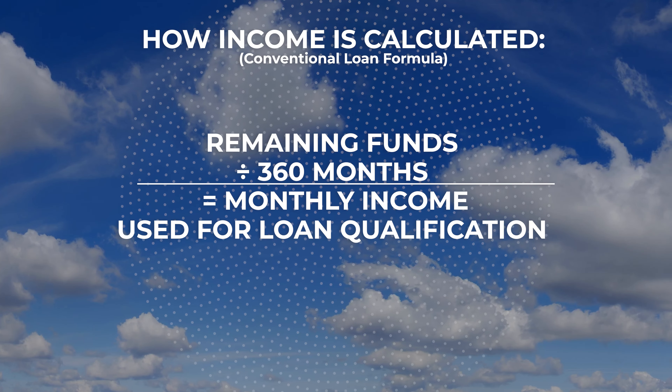We have another program called our Flex Mortgage Program, which allows us to use an 84-month amortization. That means that on a $750,000 net liquid asset, we can generate $8,928 per month in usable income for qualification purposes, and we can write that on a loan amount all the way up to $2.5 million.